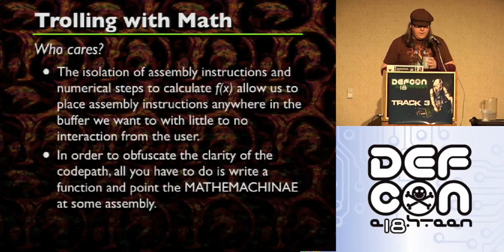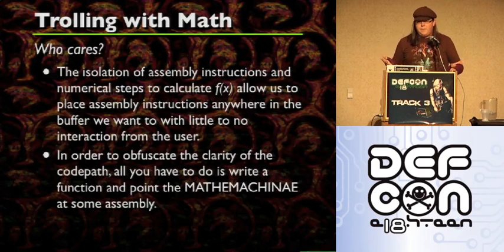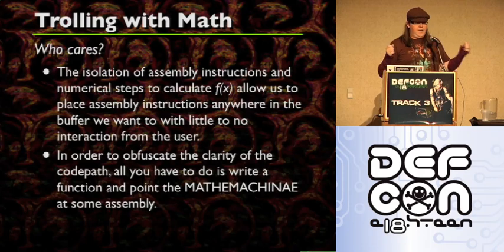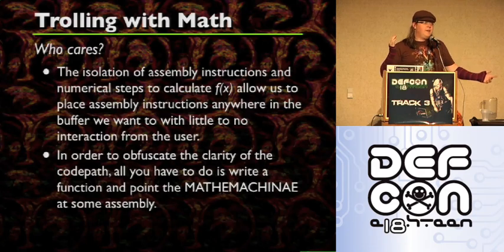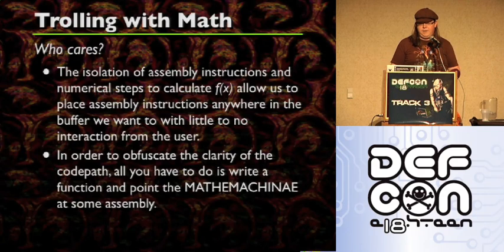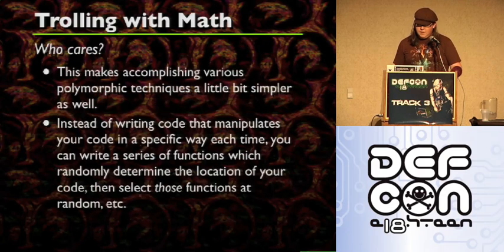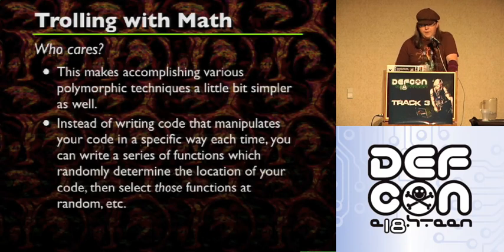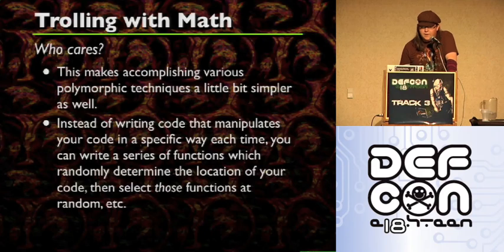So in order to obfuscate the clarity of the code path, all you really need to do is make a bunch of functions, maybe select them at random, maybe select them iteratively, or determine based on who you're attacking, generate a random mathematical thing and you can do all sorts of stuff. So if you want to perform various polymorphic techniques, you can also use this mathematical formula to do that as well.